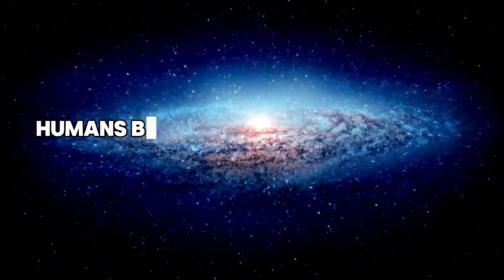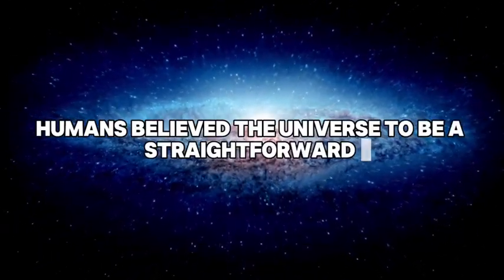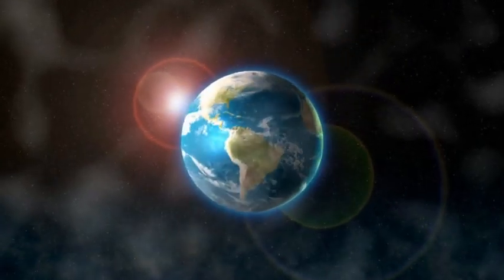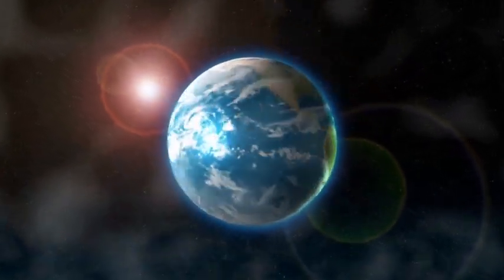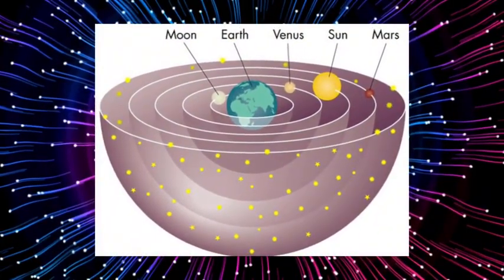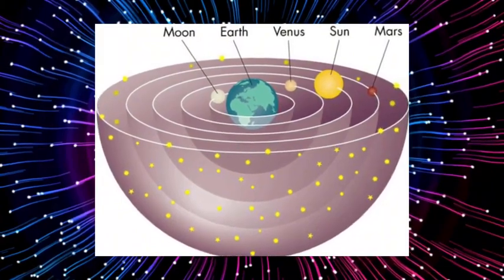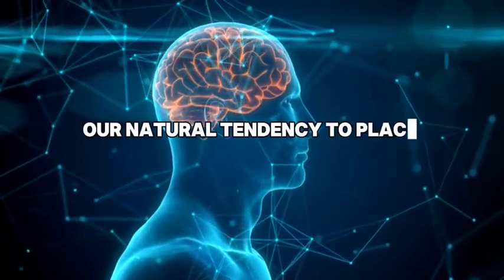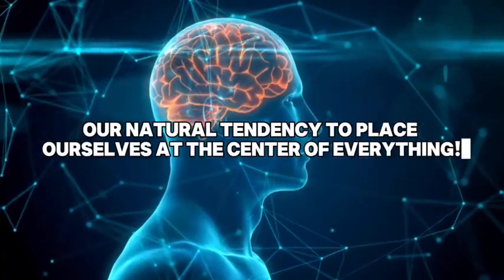For centuries, humans believed the universe to be a straightforward and orderly place. Earth was seen as the center of existence, with the sun, stars, and other celestial bodies revolving around it in perfect harmony. This view was shaped by our natural tendency to place ourselves at the center of everything.